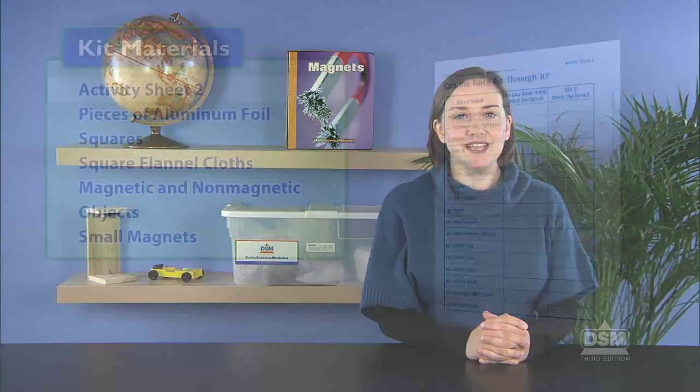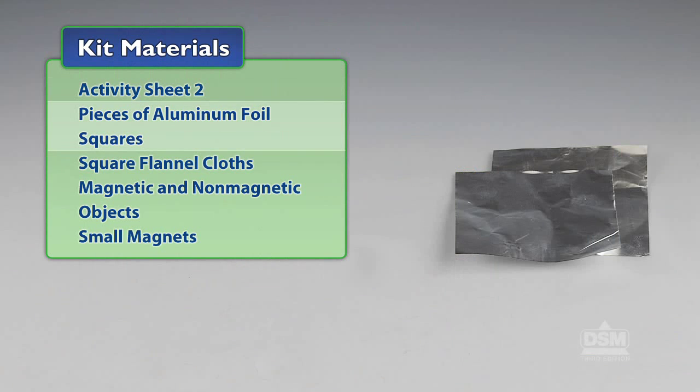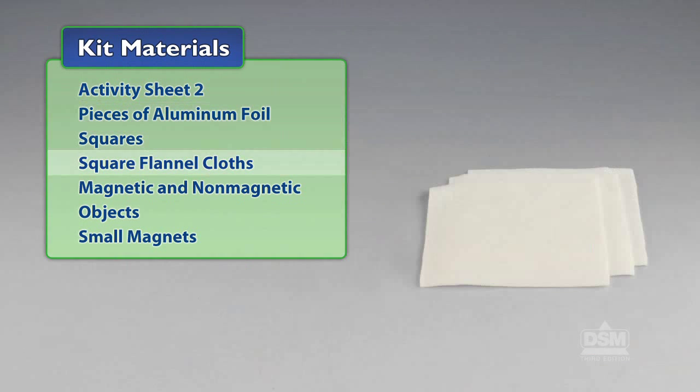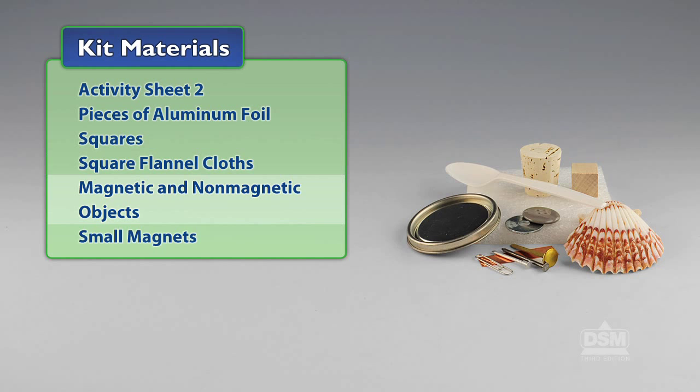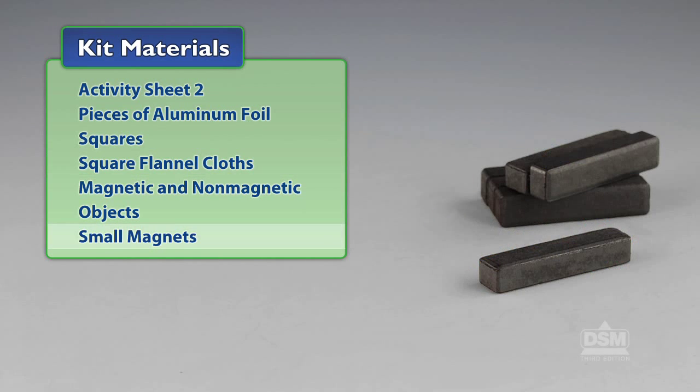You will need the following materials from the kit: Activity Sheet 2, a piece of aluminum foil squares, square flannel cloths, magnetic and non-magnetic objects, and small magnets.